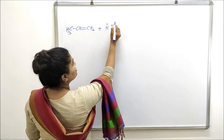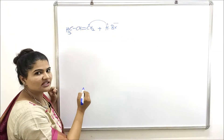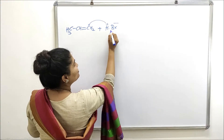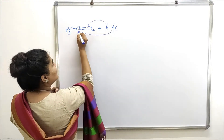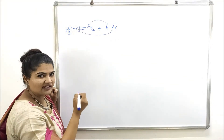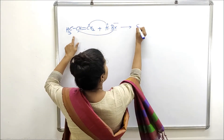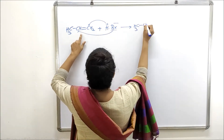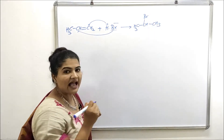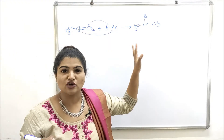The positive part of the reagent attaches to the carbon containing the greater number of hydrogen atoms — that is, the double-bonded carbon with more hydrogens — and the negative part attaches to the double-bonded carbon containing fewer hydrogen atoms. This is Markovnikov's rule. In this case, CH₃CHBrCH₃, that is isopropyl bromide, will be the major product.